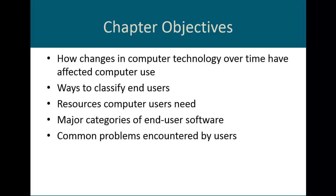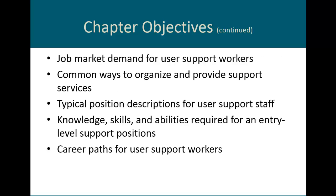Let's take a look at our objectives for this first chapter. We're going to look at how changes in computer technology over time have affected computer use; different ways to classify our end users; the different resources that computer users need; major categories of end user software; common problems encountered by users; the job market demand for user support workers; common ways to organize and provide support services; typical position descriptions for user support staff; the knowledge, skills, and abilities required for an entry-level support position; and career paths for user support workers.